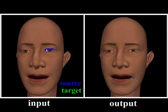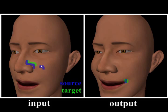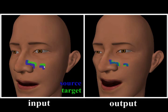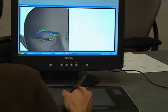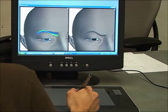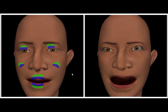We can draw a source stroke and a corresponding target stroke on the screen to edit the model. A new expression may be created with just two simple strokes. These strokes lie on the 2D screen space. We can easily sketch a new eyebrow with a tablet interface. Our interface supports the sketching of multiple strokes anywhere on the screen.